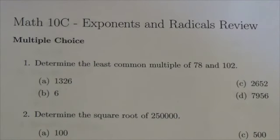Hi everyone, this is the Math 10C exponents and radicals review, and this is multiple choice number one. We're going to determine the least common multiple of 78 and 102.